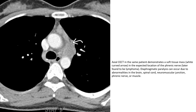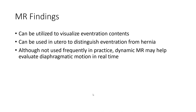Diaphragmatic paralysis can occur due to abnormality in the brain, spinal cord, neuromuscular junction, phrenic nerve, or muscle. MRI findings can be utilized to visualize diaphragmatic content and can be used in utero to distinguish the diaphragm from the plenum. Although not frequently used in practice, dynamic MRI may evaluate diaphragmatic motion in real time.